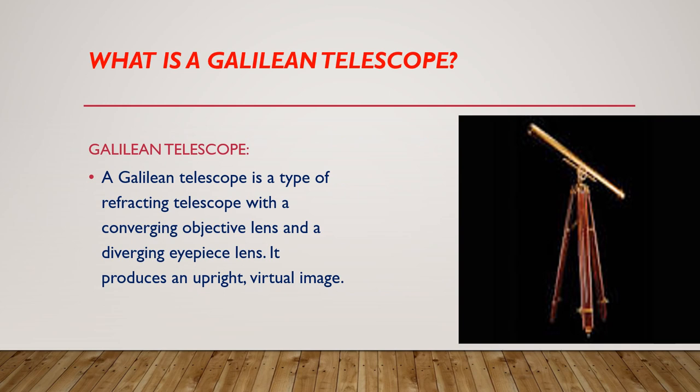What is a Galilean telescope? A Galilean telescope is a type of refracting telescope with a converging objective lens and a diverging eyepiece lens. It produces an upright virtual image.